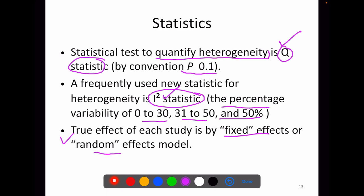In a fixed effect model, we assume that effect sizes in our meta-analysis differ only because of sampling error and they all share a common mean. The analysis part related to meta-analysis will be dealt with later.